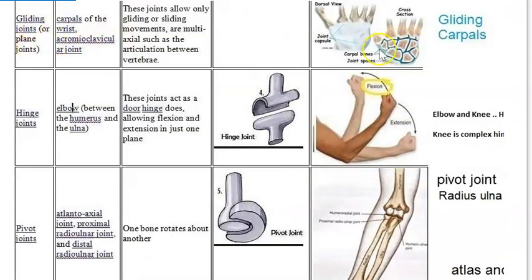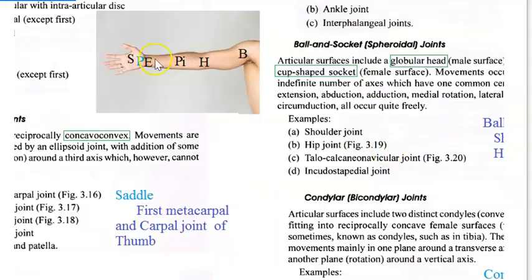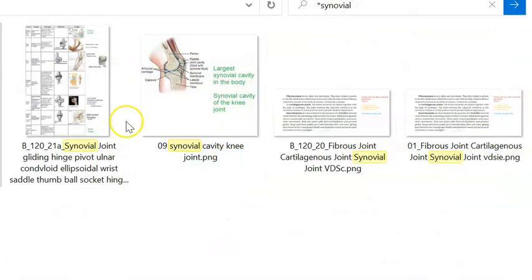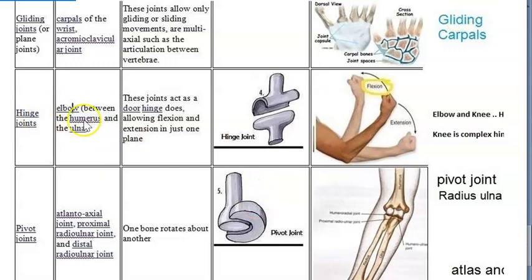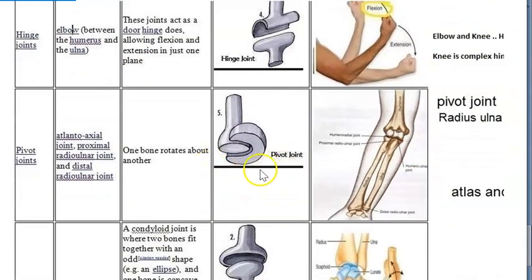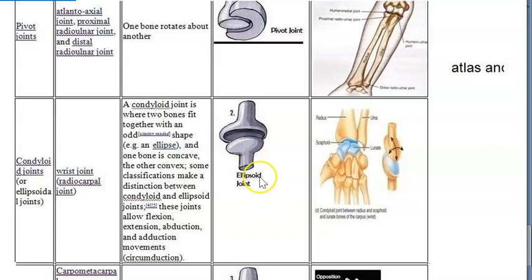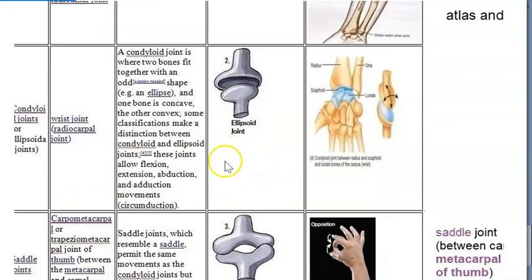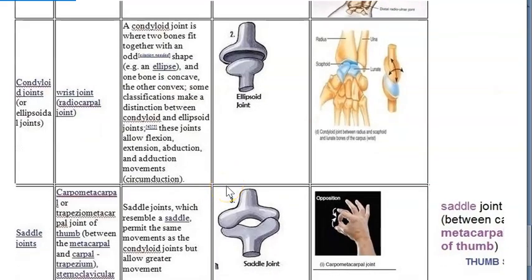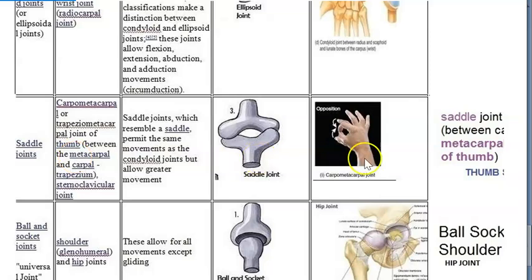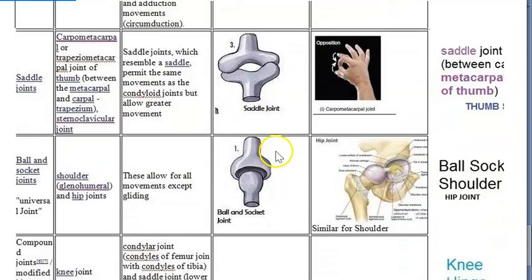So the saddle joint between the thumb especially gives you that opposition. Plane joint - gliding joint - where will we see? Between the carpals. Hinge joint - where will you see? The elbow. Then we saw pivot joint - pivot is the radius and ulna. Then you have the ellipsoid joint - where? Wrist - that is the radiocarpal joint, between the radius and the carpals. Then you have the saddle joint - saddle joint is your thumb: the metacarpal and the carpal trapezium.